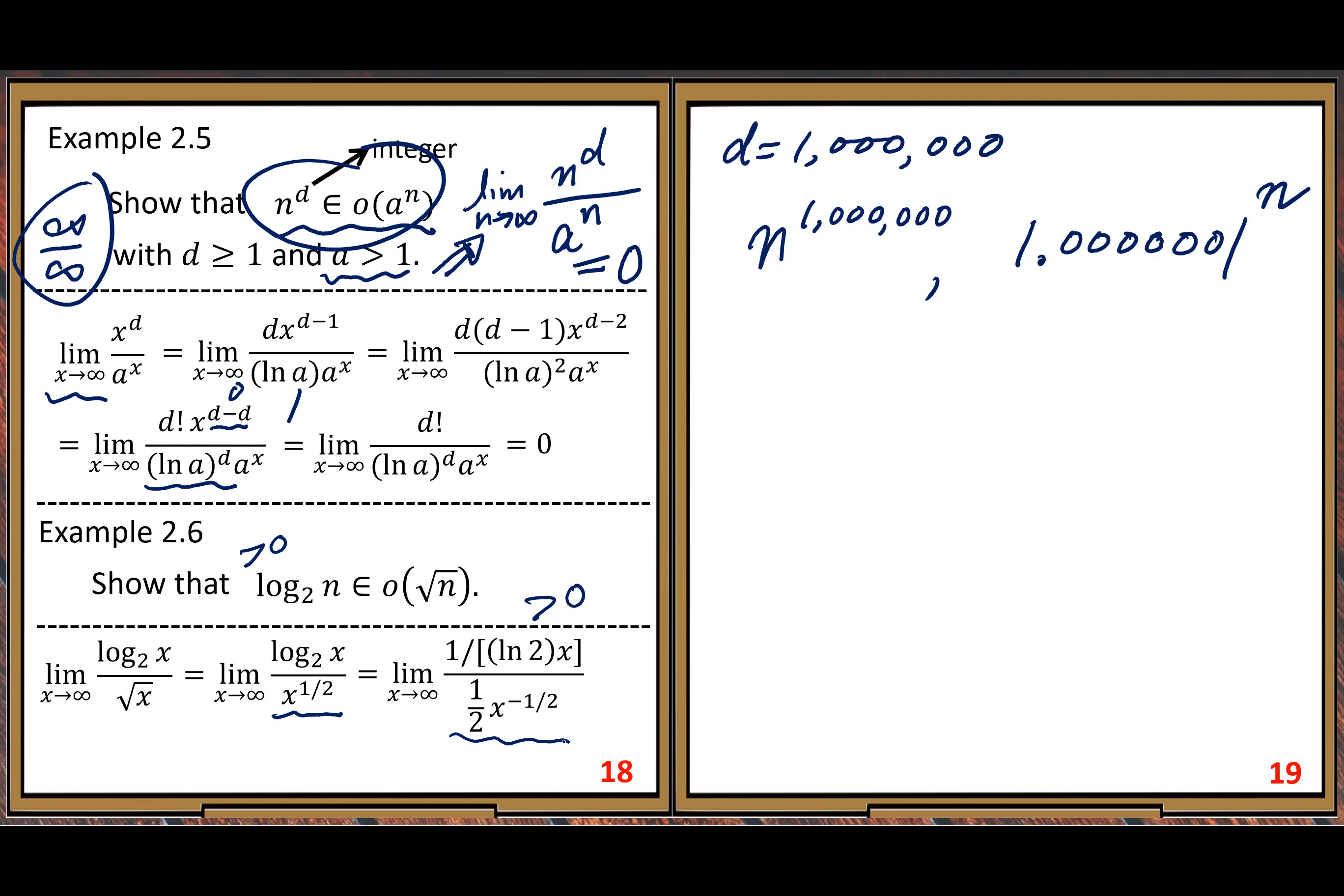After simplification, you get this expression after simplification. Now it's not in determinate form. The denominator goes to infinity. Numerator constant. So the whole limit must be zero.